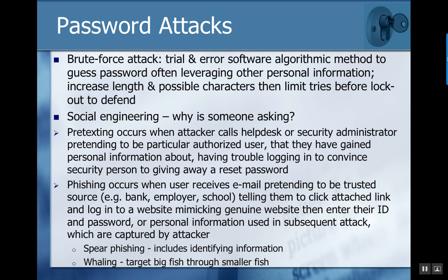Spear phishing is a very specific form of phishing going against a very specific target — you identify the individual and make it look like something from a person they would know. Whaling is working up a chain to get a big fish through smaller fish. All of these are legitimate attack vectors, which is one reason best practices require more than one factor — passwords can be subverted and are not a foolproof means of providing protection.